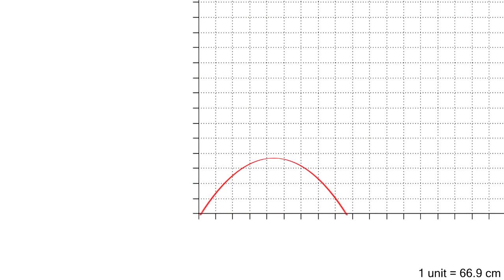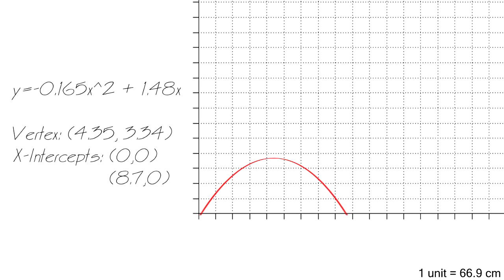After performing a chip shot, the ball reached its target after 8.7 meters within 1.2 seconds and was then plotted on a graph. The quadratic equation of this graph was y equals negative 0.165x squared plus 1.48x. The negative value of the coefficient of x represents that the parabola has a maximum point, and since the y-intercept is 0, there is no c value.